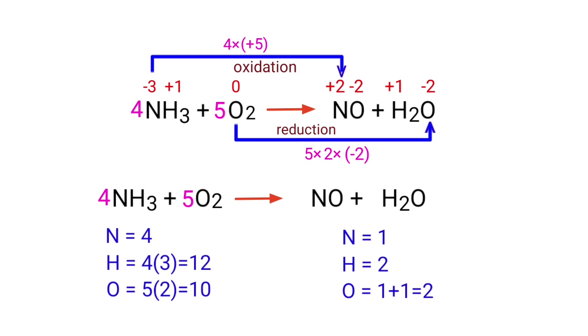In this equation we need to balance the nitrogen atoms first. To do this we need to put a coefficient of 4 in front of NO.